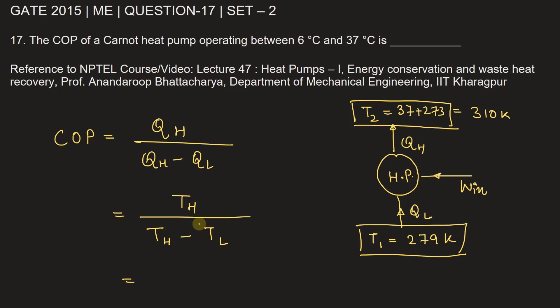Temperature of higher body is 310 divided by 310 minus 279, which is equal to 310 divided by 31, which is 10. So the coefficient of performance of the Carnot heat pump in this case is 10.